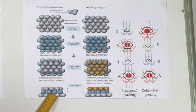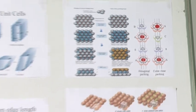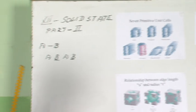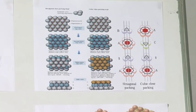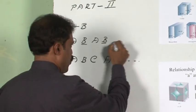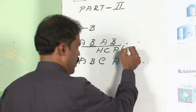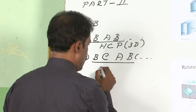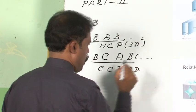When you arrange the spheres like this, two possible arrangements exist. In the first, the first layer and third layer come together — we call it an ABAB arrangement, since the second layer is not aligning on the first layer. In the other arrangement, the first layer, second layer, and third layer are all different. The first pattern is called hexagonal close packing (HCP) in three dimensions, and the second is called cubic close packing (CCP).